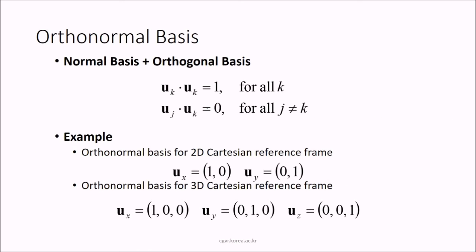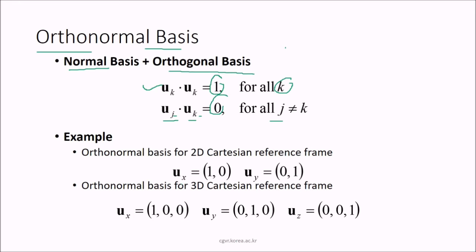The orthonormal basis combines normal and orthogonal basis properties: uk·uk = 1 for all k (when vectors are the same), and uj·uk = 0 for all j ≠ k (when different). For example, the orthonormal basis of a 2D Cartesian frame: ux = (1,0), uy = (0,1). For 3D Cartesian: ux = (1,0,0), uy = (0,1,0), uz = (0,0,1).